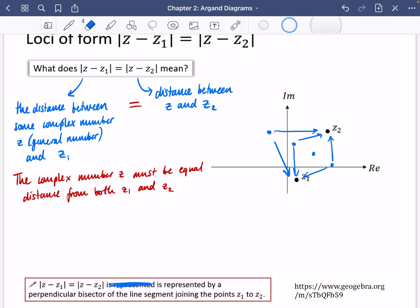So let's actually add this to our diagram so that we've got this in our notes. I'm going to first of all connect z1 and z2 together, and then I'm going to do a perpendicular bisector. So I'm going to represent my loci here using this red line. It's perpendicular and it has also bisected that line segment.